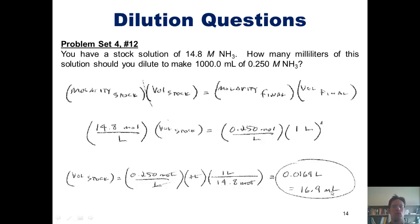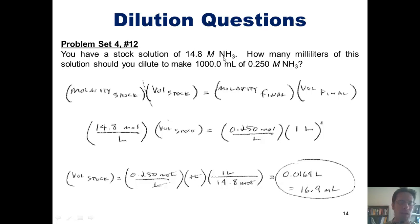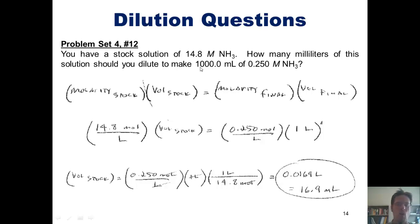What that means is that if I started with my original stock solution that was 14.8 molar in concentration, I would take 16.9 milliliters of that stock solution and dilute it with water up to 1,000 total milliliters to get a final diluted solution with a concentration of 0.25 moles per liter.